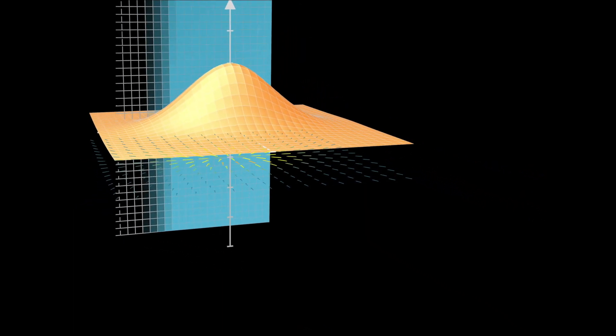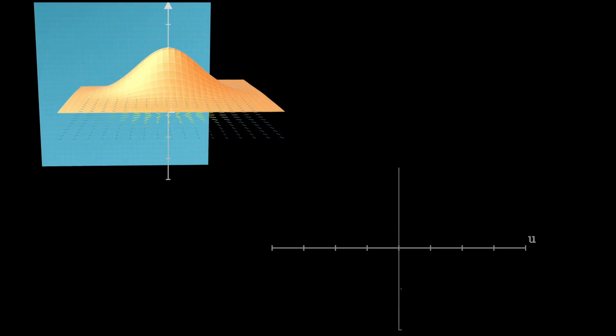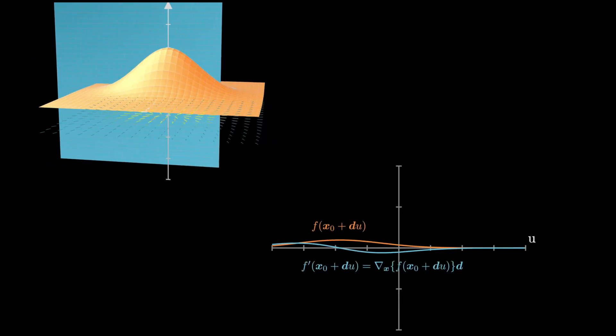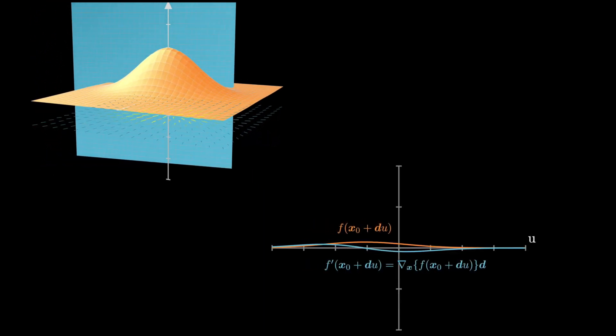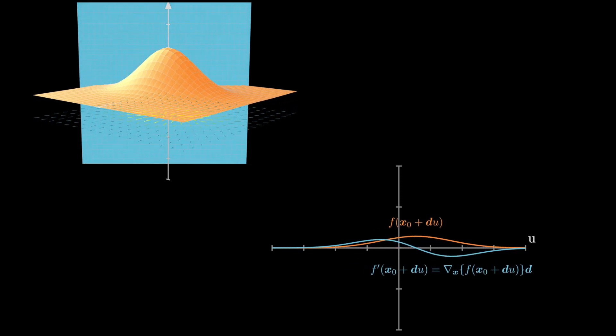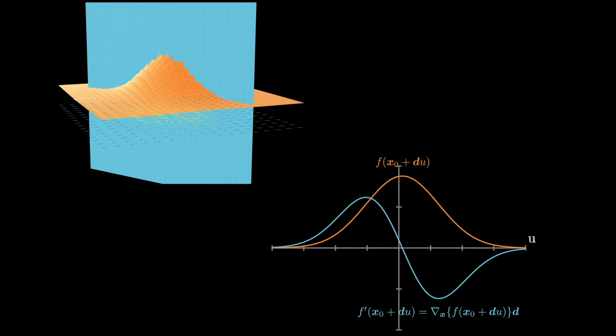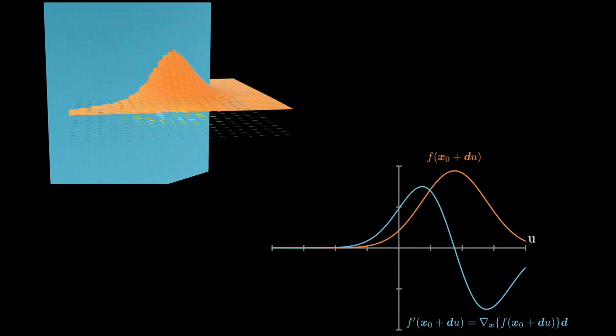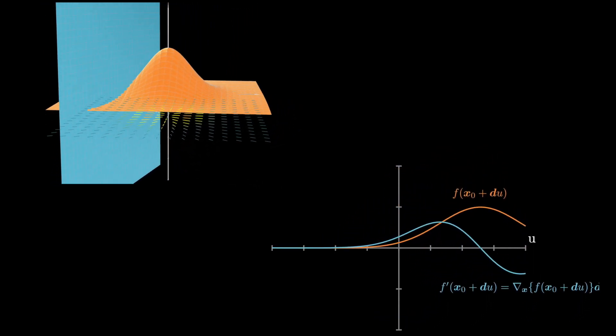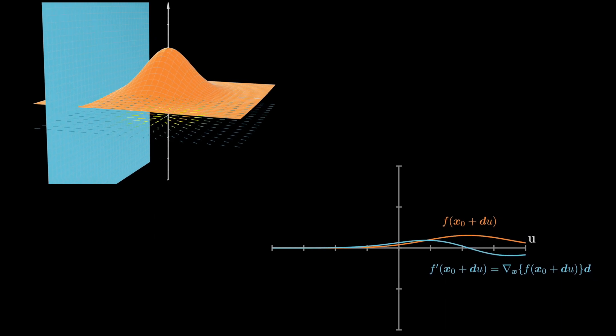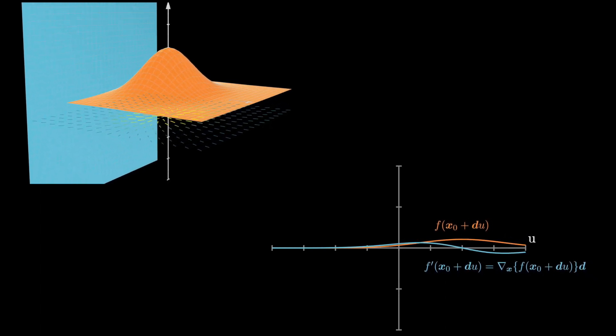You can think of this as taking a slice out of the function and then just looking at the scalar function defined only in that slice. Here I'm illustrating such a slice with a blue plane through the orange surface. In the bottom right, the orange line is the scalar function along the slice, the blue line is its derivative. It's important to realize that these functions are defined in terms of a scalar u and d is the direction.